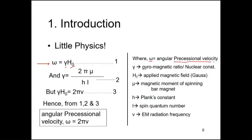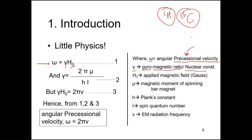Omega is the angular precessional velocity — it is the angular velocity of the precessional motion of the nucleus. Gamma is the gyromagnetic ratio; it is a nuclear constant with a fixed value for each nucleus. For the H-1 nucleus it will be a fixed value, for C-13 it will be a fixed value. H0 is the applied magnetic field measured in Gauss.